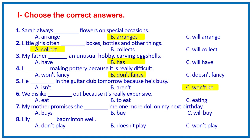Sentence 6: the key word is 'dislike.' After dislike, we use the -ing form; the answer is 'itching' — we dislike eating out because it's really expensive. Sentence 7: 'next birthday' is the signal word of the Future Simple tense; the answer is C — my mother promises she will buy me one more dose on my next birthday. And the last one: B — Lily doesn't play badminton well.